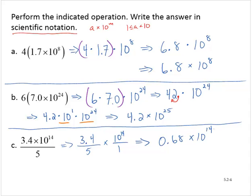And we say, is that scientific notation? And it's not. It's not scientific notation because 0.68 is less than 1. And in scientific notation, that A has to be between 1 and 10.